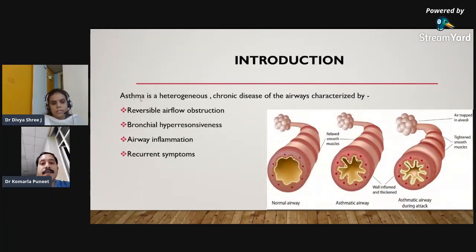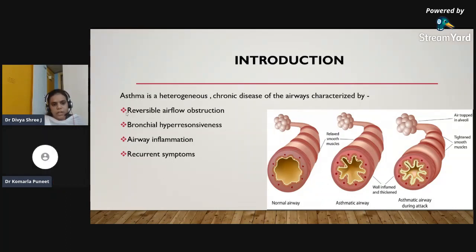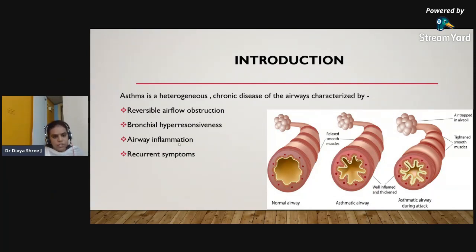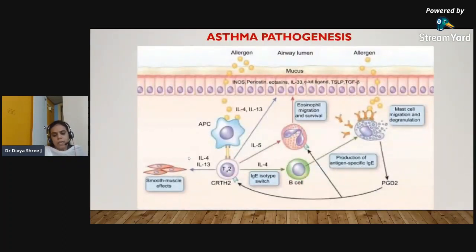Asthma is a heterogeneous chronic disease of the airway characterized by reversible airflow obstruction, bronchial hyperresponsiveness, airway inflammation, and recurrent symptoms. Today's topic's main core is on the pathogenesis because all the drugs are targeted therapy. So let's know a little about the pathogenesis of asthma.